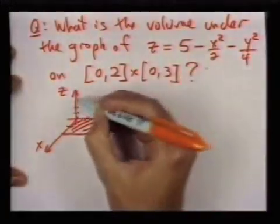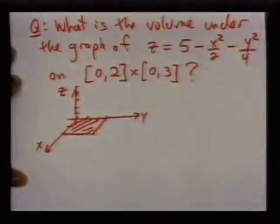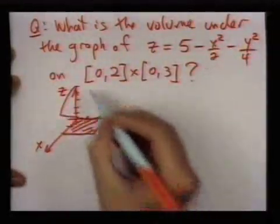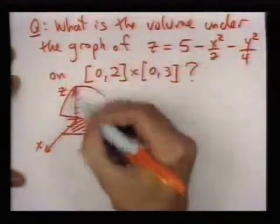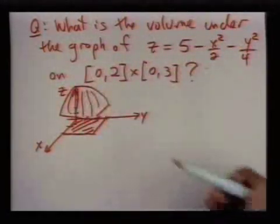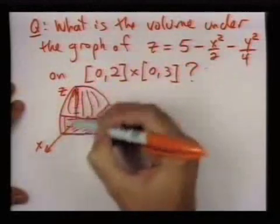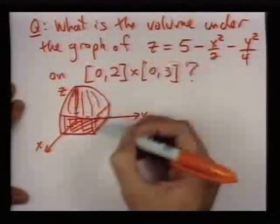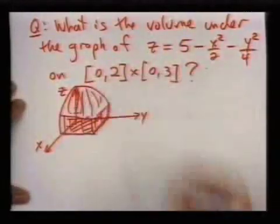So it sort of starts out at 5 and kind of goes down this way, and it has approximately this type of dome shape. And so the thing we're trying to find is the volume between the xy plane on this rectangle and this dome shape above.